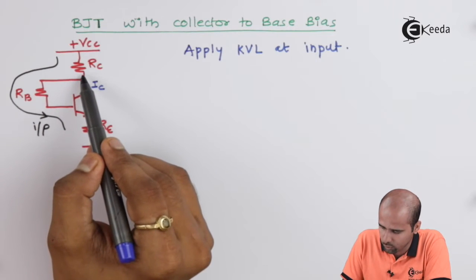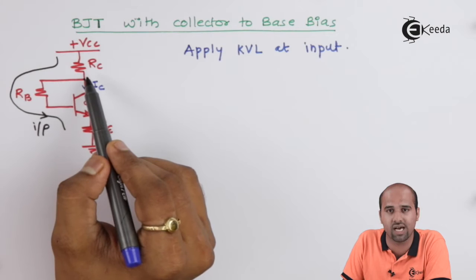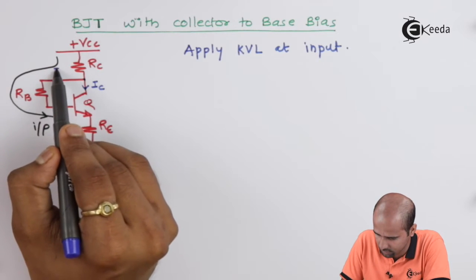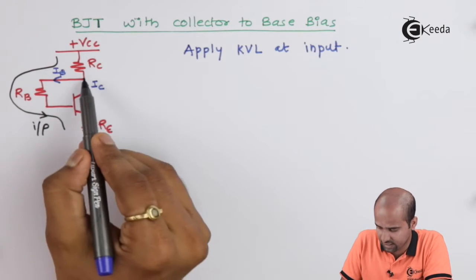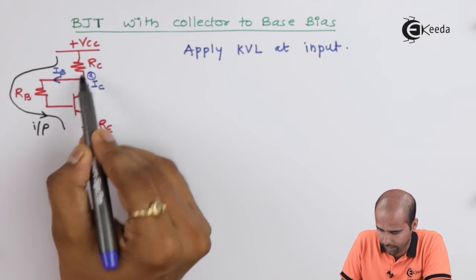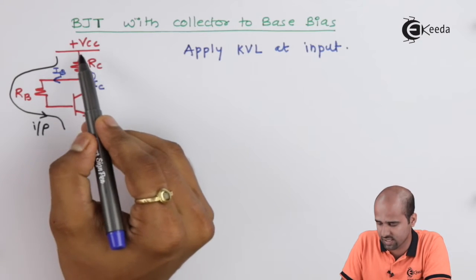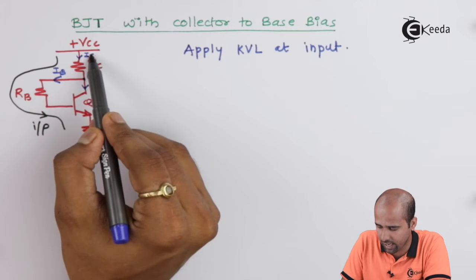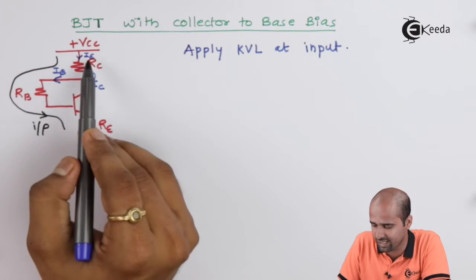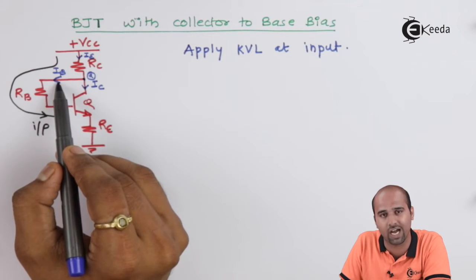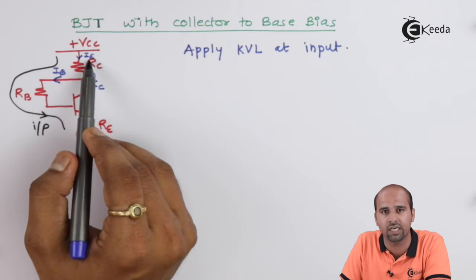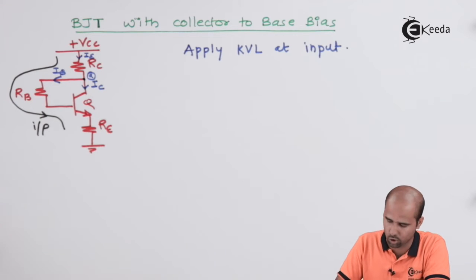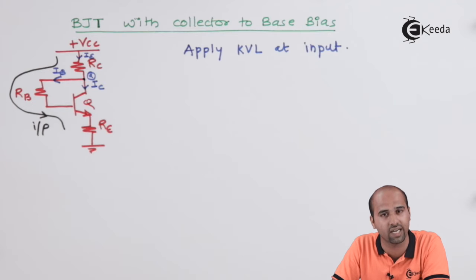We will find the current flowing through resistance RC. The current flowing through resistance RB is IB. Applying KCL at node A, the current flowing through resistance RC is IB plus IC, which is nothing but IE. So we name this current IE. This is because IB plus IC equals IE. Therefore, the current flowing through resistance RC is not IC but rather IE, and in the mathematical expression we will write IE accordingly.